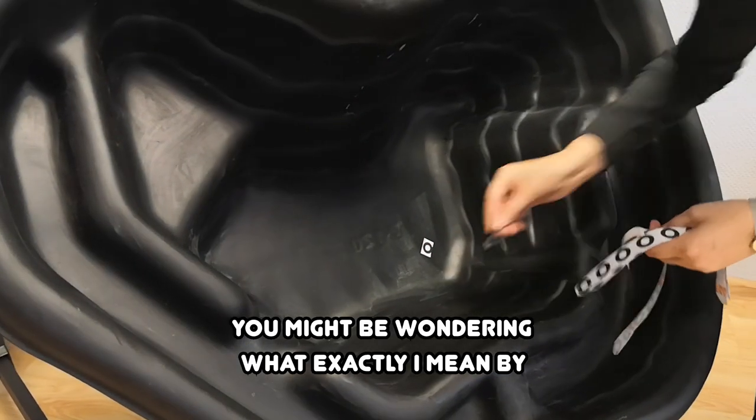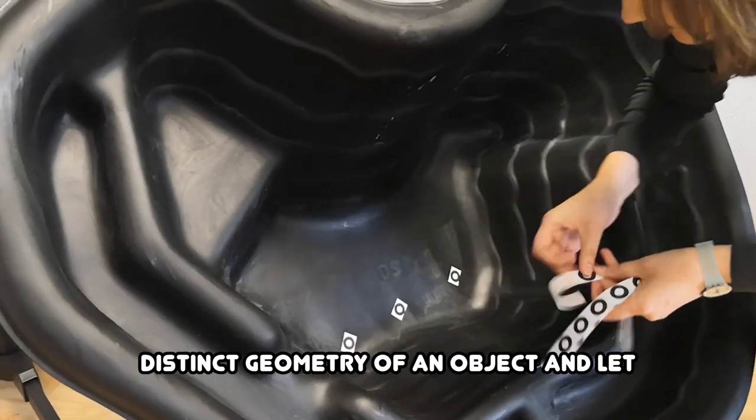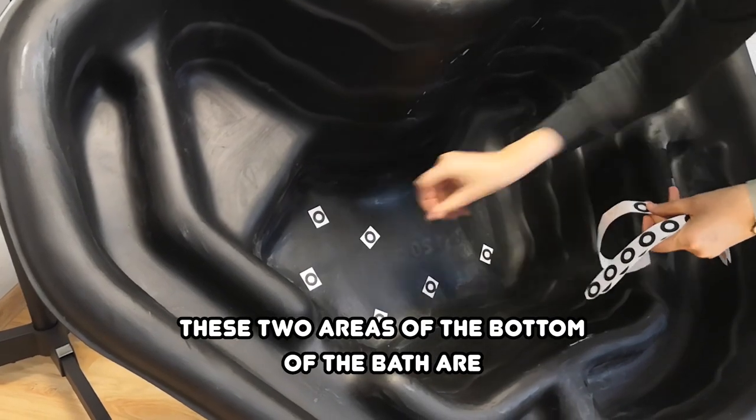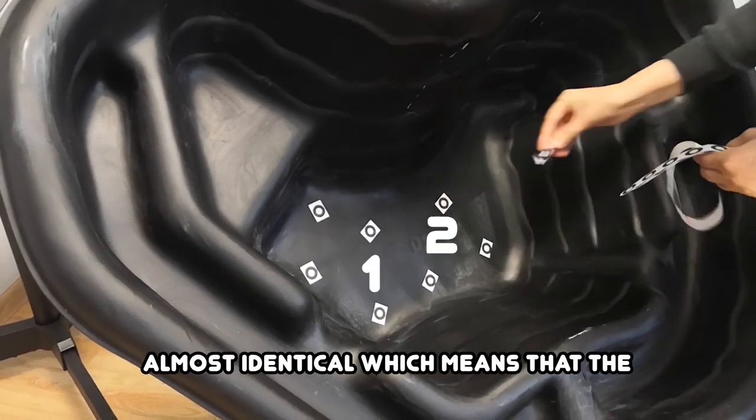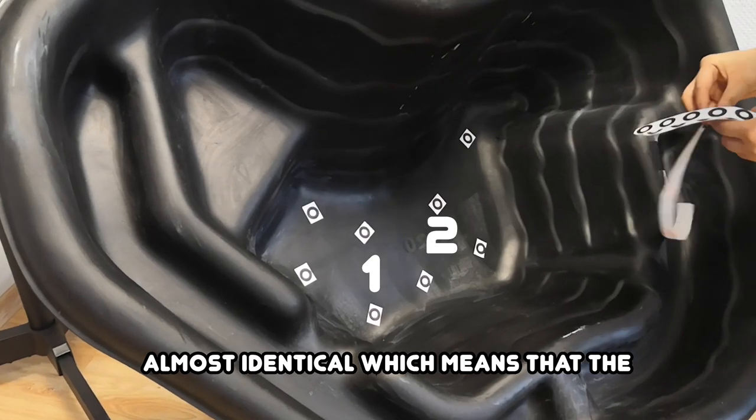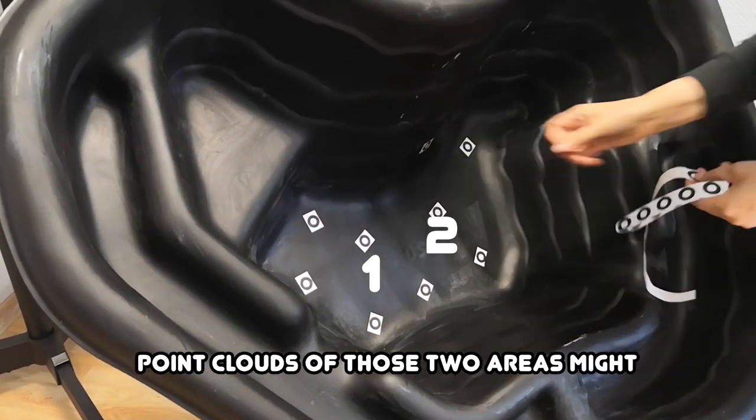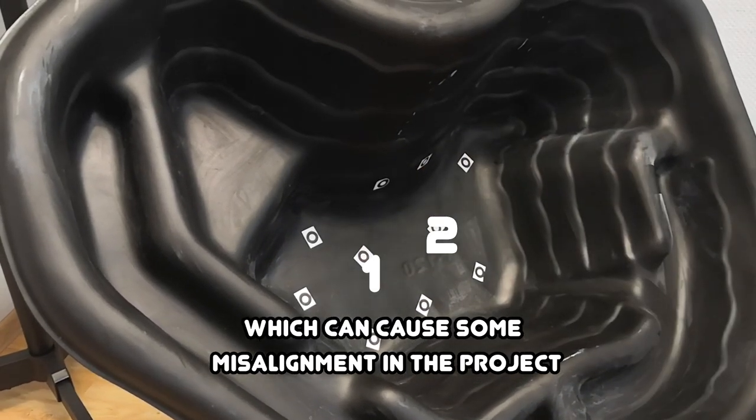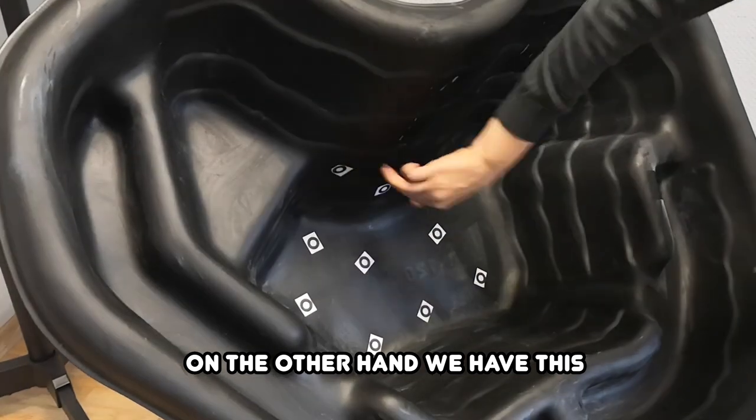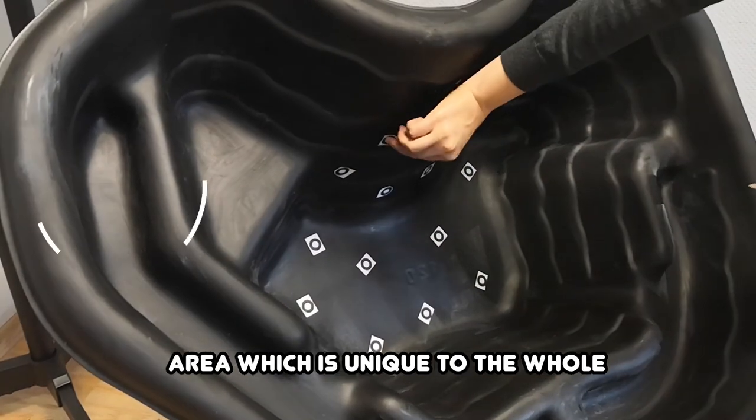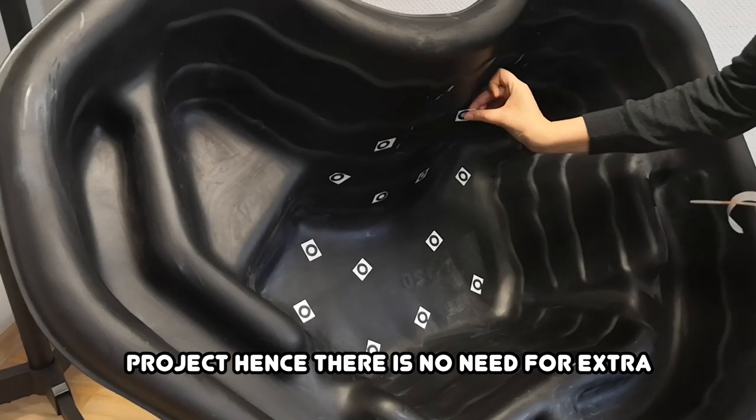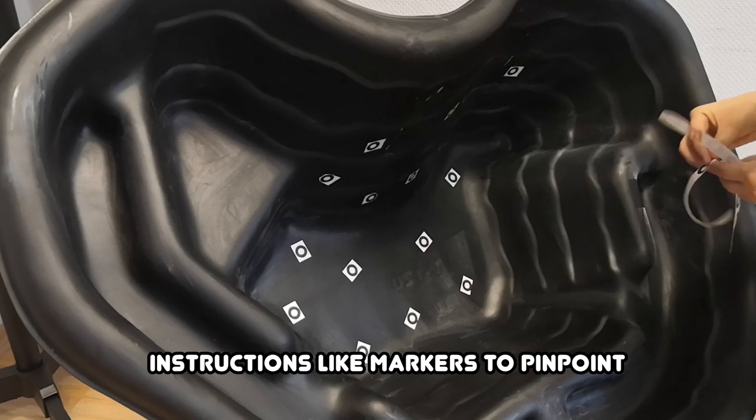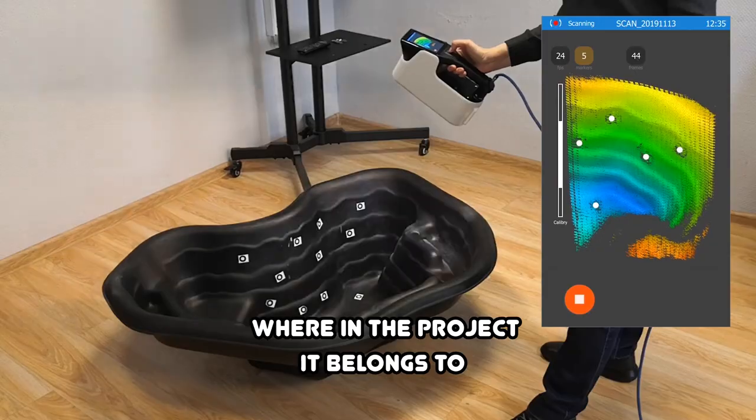You might be wondering what exactly I mean by distinct geometry of an object. Let me give you several examples. These two areas of the bottom of the bath are almost identical, which means that the point clouds of those two areas might also look identical to each other, which can cause some misalignment in the project. On the other hand, we have this area which is unique to the whole project. Hence, there is no need for extra instructions, like markers, to pinpoint where in the project it belongs to.